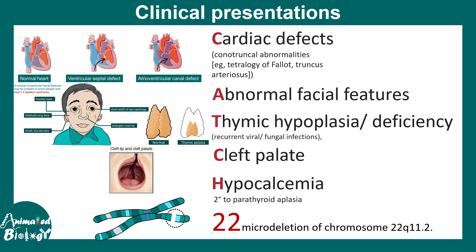DiGeorge syndrome has different clinical presentations, which can be summarized using the mnemonic CATCH 22. C stands for cardiac defects. There are several cardiac defects associated with DiGeorge syndrome, including ventricular septal defect, atrioventricular canal defect, tetralogy of Fallot, and truncus arteriosus, among others.